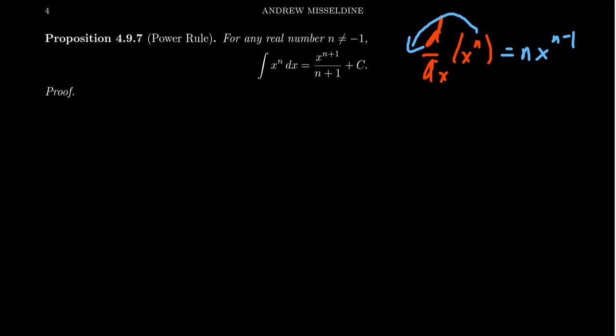If we reverse this process, we increase the exponent by one. We were multiplying by the exponent and subtracting one from it — now we reverse: we add one to the exponent and divide by that new exponent, n plus one. This gives us what we might call the power rule for anti-derivatives, or the anti-power rule — the kryptonite for the power rule.